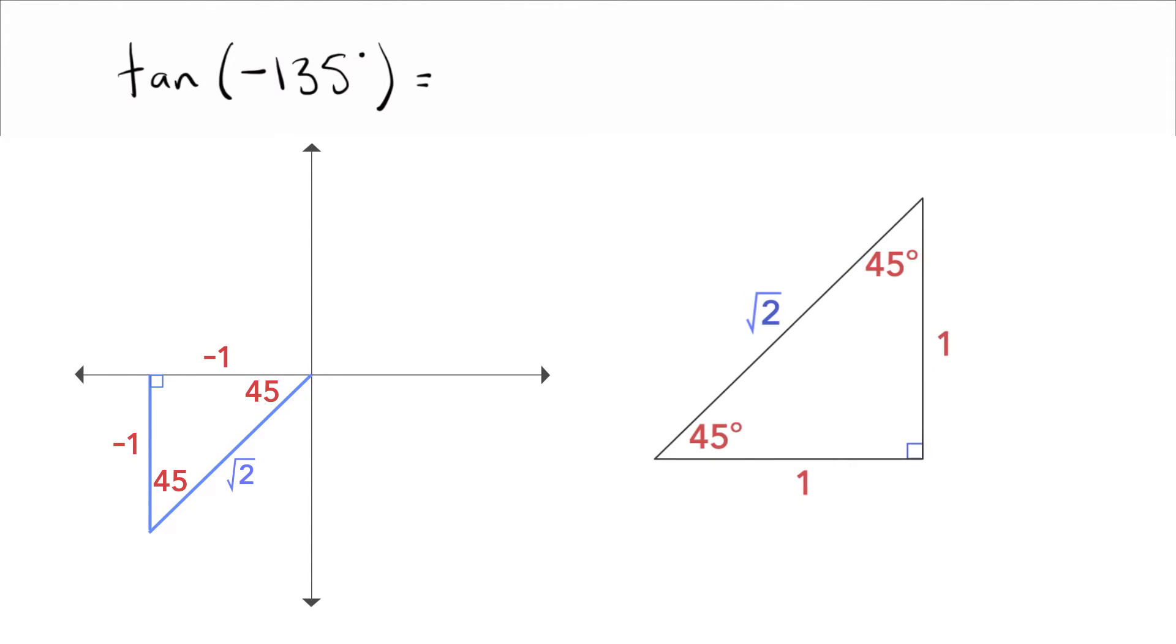And now, tangent, I take the opposite side over the adjacent side. Negative 1 over negative 1 gives me 1. And once again, I did it there.